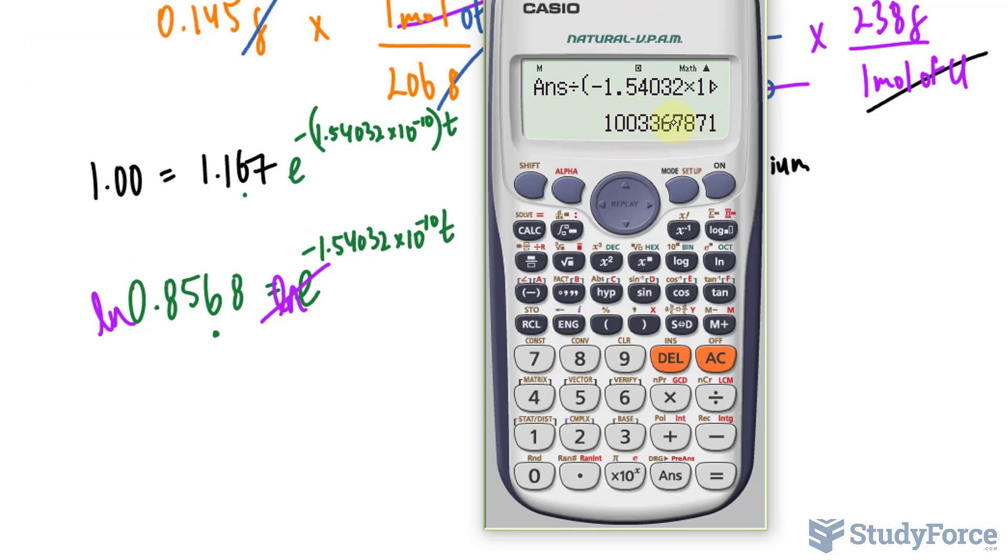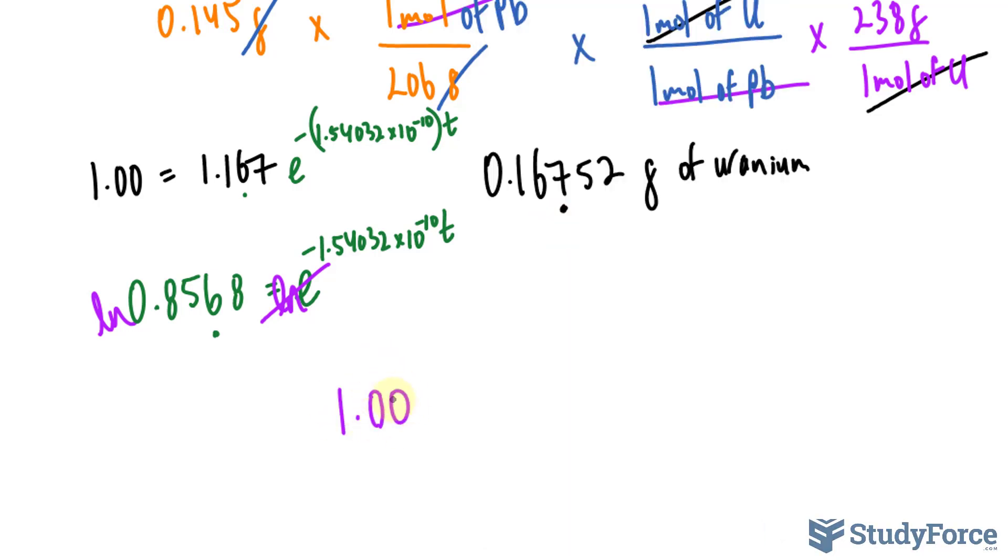And we end up with a t value of 1.00, and let's count how many numbers after that first decimal place. 1, 2, 3, 4, 5, 6, 7, 8, 9. So 1.00, and we want this to three significant figures, times 10 to the power of 9 years.